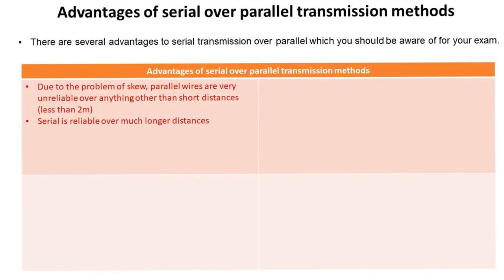There are also several other major advantages to serial transmission over parallel, which you need to be aware of for your exam. The problem of skew in parallel wires means that transmission using parallel methods is very unreliable over about 2 metres. Serial, however, is reliable over much longer cabling distances.